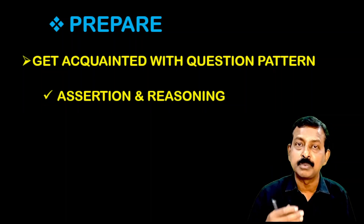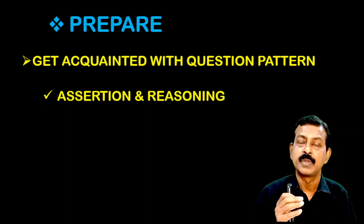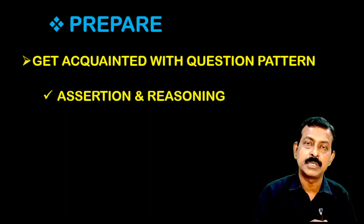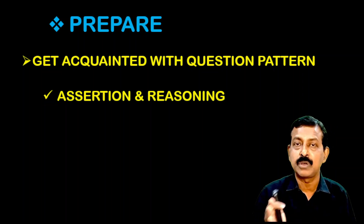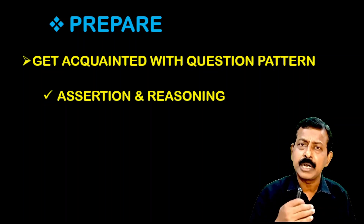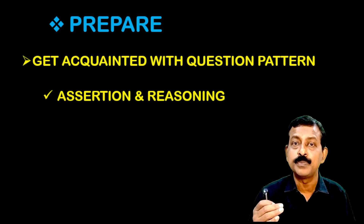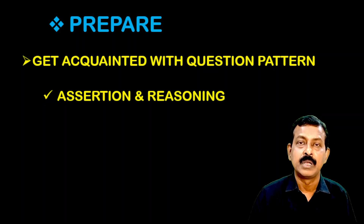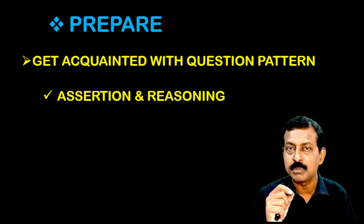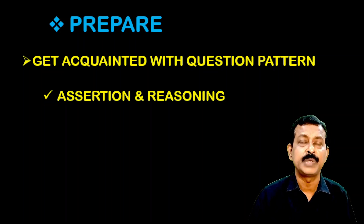For each assertion and reasoning question, go through the options carefully, as they may differ from question to question. Options typically include: both assertion and reason are true and reason is the correct explanation; both are true but reason is not the correct explanation; assertion is true and reason is false; assertion is false and reason is true; or both are false. First read the options, then the statements, then choose the correct option.